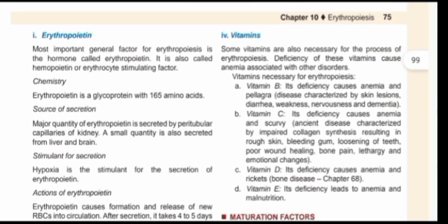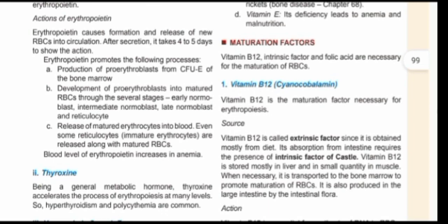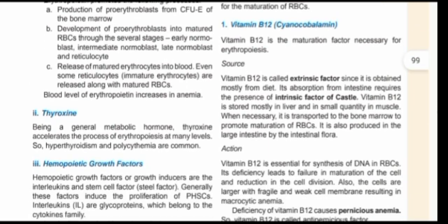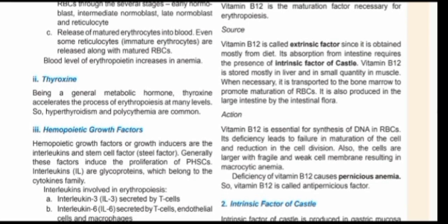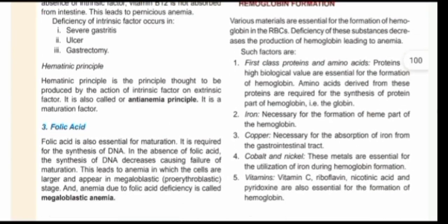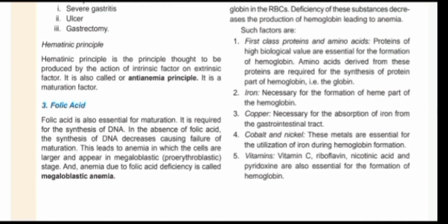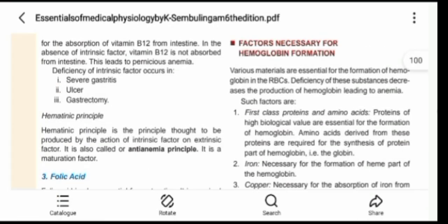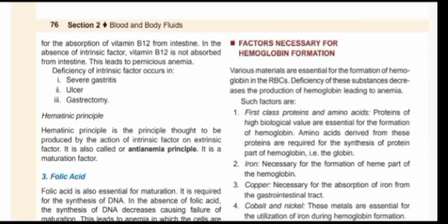The maturation factors include vitamin B12, also called cyanocobalamin. Vitamin B12 is an extrinsic factor, and its absorption involves the intrinsic factor of Castle, which is produced in the stomach. This intrinsic factor helps in the absorption of vitamin B12. Folic acid is also essential as a maturation factor — when there is deficiency of folic acid, the anemia formed is megaloblastic anemia. That's all for the review series of chapter 10 of the Essentials of Medical Physiology. Thank you very much for listening.